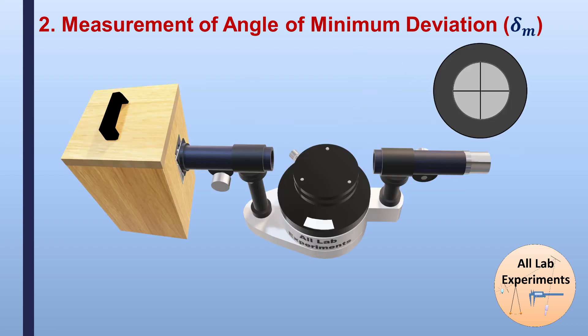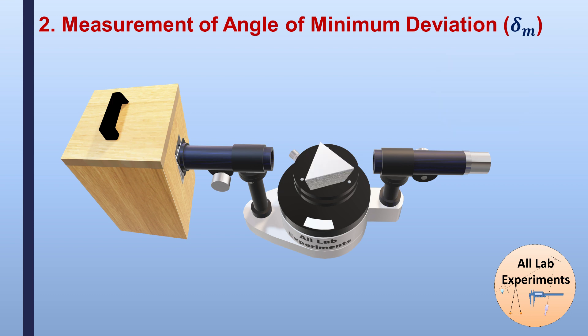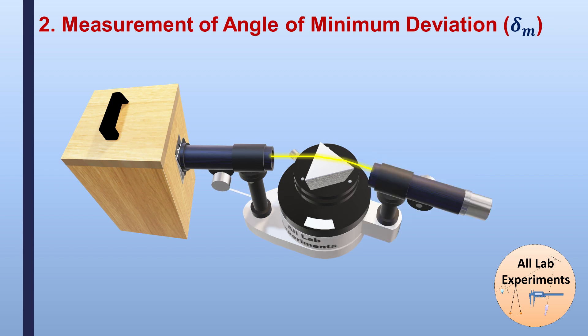Coming back to our setup, we first measure the position of the direct ray — straight from the collimator to the telescope — recording readings from vernier scale one and vernier scale two. Then we place the prism at the center of the prism table with the rough side facing us, and observe that the yellow light from the collimator deviates due to the prism. We rotate the telescope to measure the position of this deviated light.